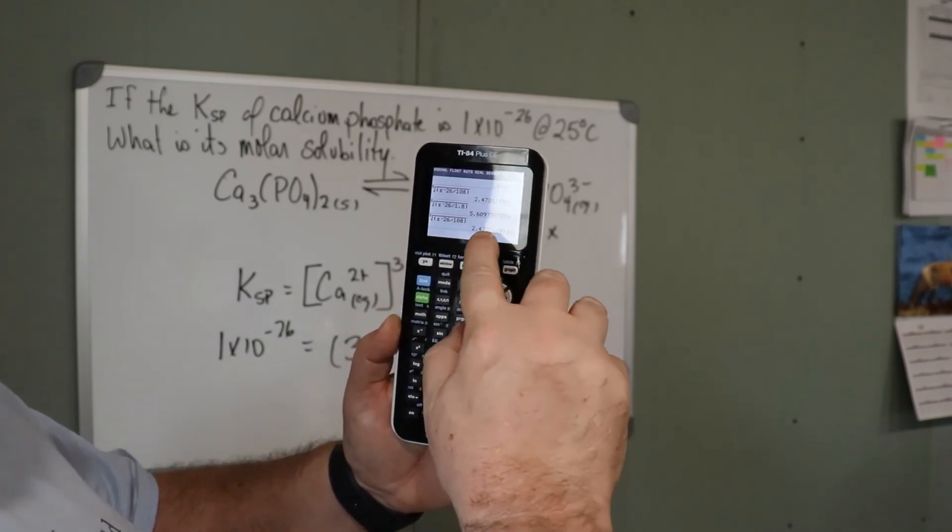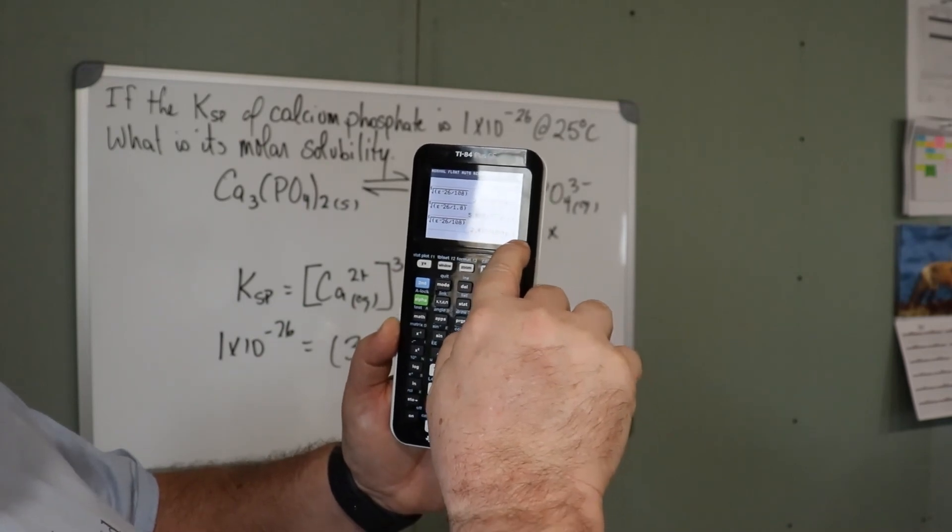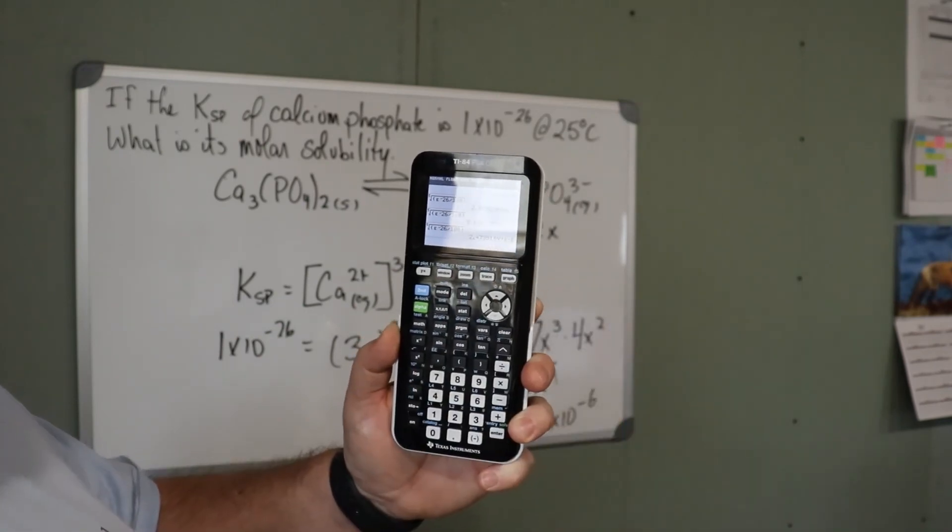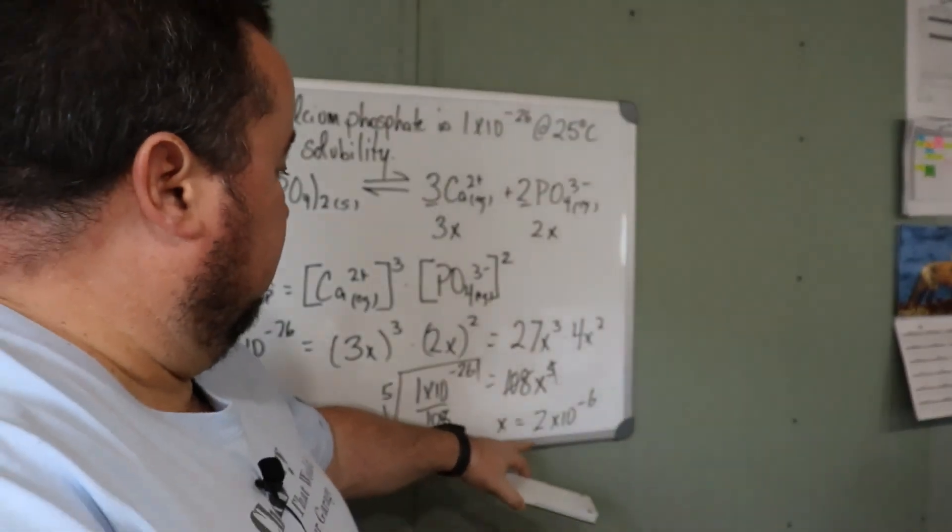Here we go. 2 times 10 to the -6. Same as our answer here on the screen. Thank you.